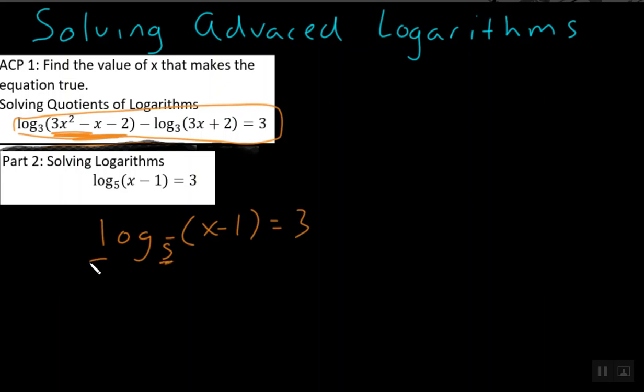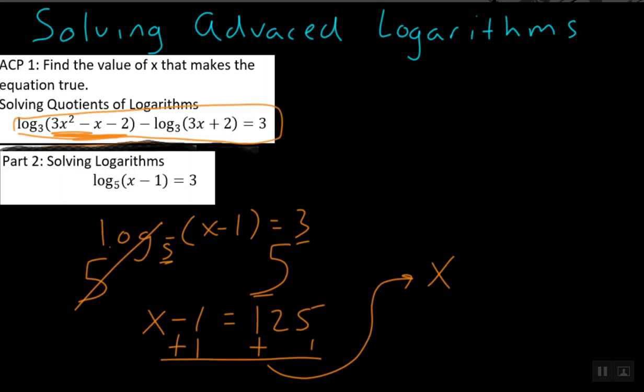Well, since the base is 5, we base 5 the whole thing. We put everything into the exponent of that number 5, and what we do to the left, we do to the right. Now, 5 to the power of log base 5, those two things cancel, as we know. So we have x minus 1 equals, and 5 cubed is 125. And from here, we're trying to get x by itself. Well, how do you get rid of minus 1? Well, of course, plus 1, plus 1, and it turns out that in this case, x is equal to 126. Pause the video, finish taking notes, let's move on to part 3.